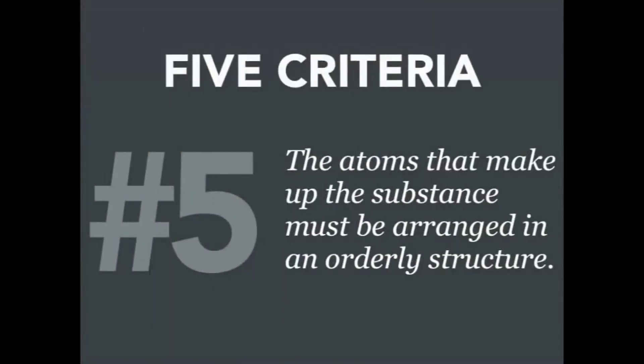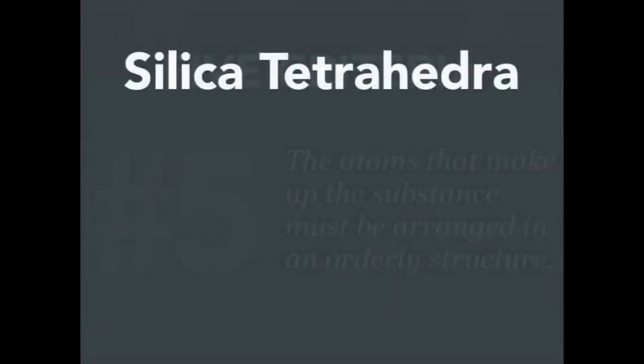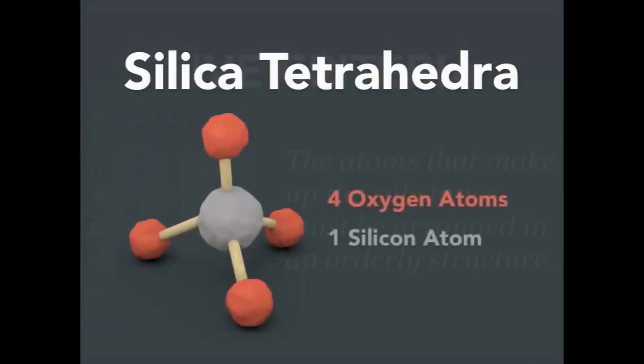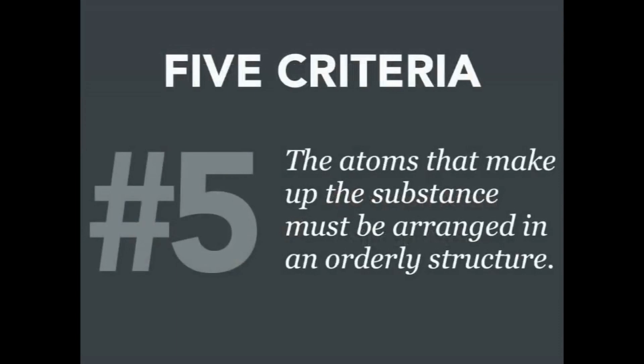And then finally, criteria number five, the atoms that make up the substance must be arranged in an orderly crystal structure, a specific structure. Let me give you an example of this. The majority of the minerals that exist on Earth's surface are considered silicates, and that means they're made up of, in part, silicon and oxygen. The silica tetrahedra is the most common arrangement of silicon and oxygen atoms within a mineral. It looks something like this model here, where the red balls of clay represent oxygen atoms, and the gray is a silicon atom. And you can see they're bound together in this tetrahedra shape, and this becomes the most common building block of minerals on Earth. So that's what we mean when we say the atoms must be made up of a specific orderly structure.